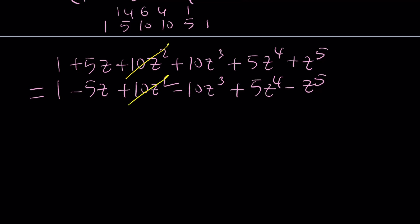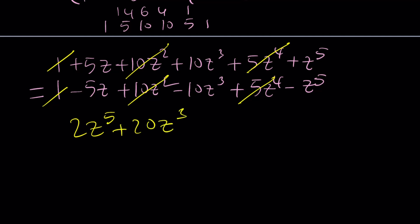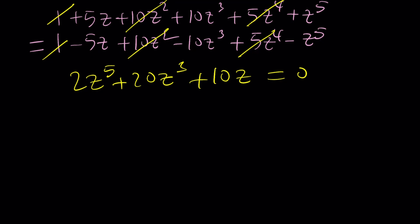The terms that cancel are 1, 10z², and 5z⁴. Everything else we collect on the left-hand side. z⁵ plus z⁵ gives 2z⁵; 10z³ plus 10z³ gives 20z³; and adding 5z + 5z gives 10z. The whole thing equals 0.